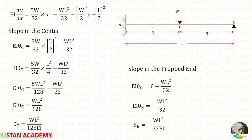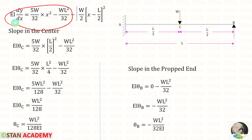Now let us find the slope at the propped end. At point B, x equals 0. Substituting x equals 0, we get theta_B equals minus WL² upon 32 EI.